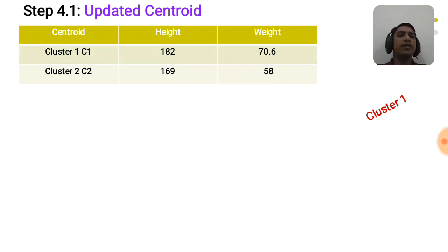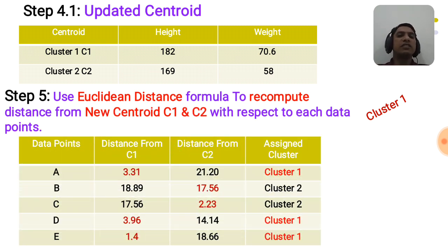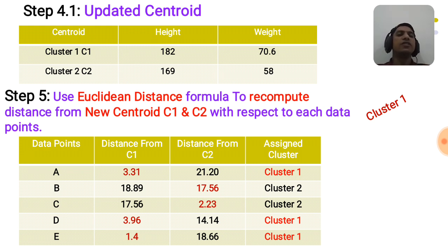So the updated centroids are c1 at (182, 70.6) and c2 at (169, 58). We then use the Euclidean distance formula to recompute distances from the new centroids to each data point. The resultant distance table is shown here. Data point A has minimum distance 3.31, so it is assigned to cluster c1. Data point B has minimum distance 70.56, so it is assigned to cluster c2. Data point C has minimum distance 2.23, so it is assigned to cluster c2.